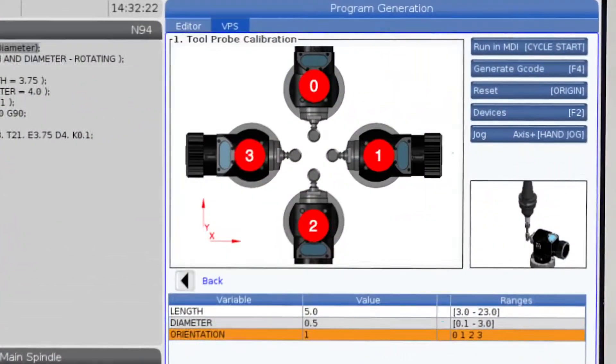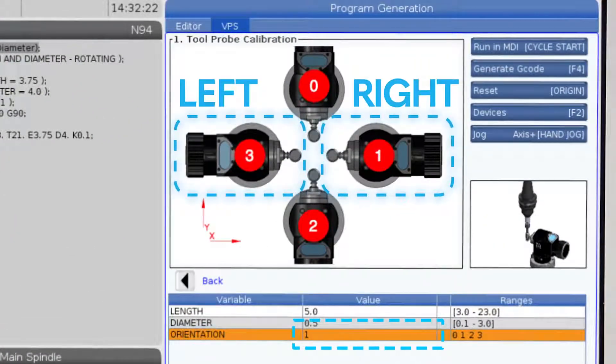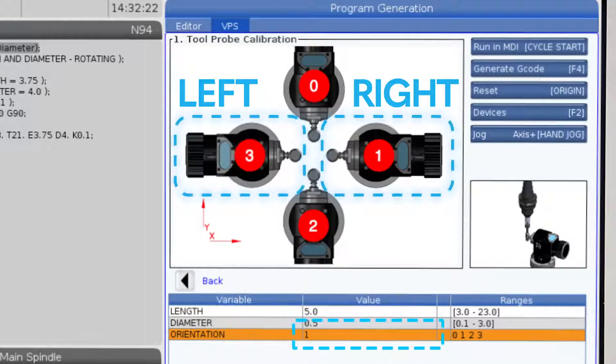And then again, if your probe is on the left side of the table, it would never probe from the left side. This is why we choose our setup direction from the setup screen during our calibration process. Because the tool never comes from this right side in this setup, we don't need a bunch of extra travel there. We don't need that extra space.